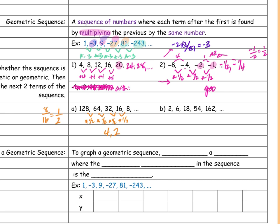For the next sequence — 2 to 6, 6 to 18, 18 to 54, 54 to 162 — I'm multiplying by 3. Then the next two terms: 162 times 3 is 486, and times 3 again is 1,458.